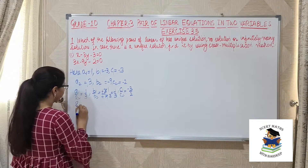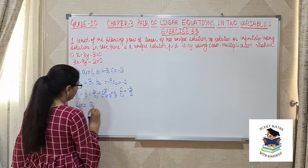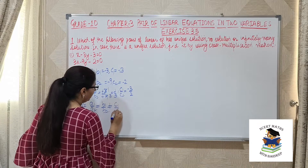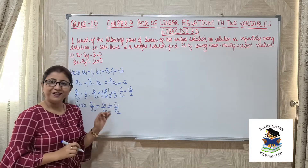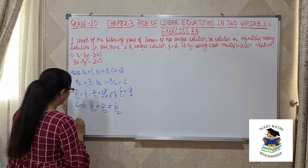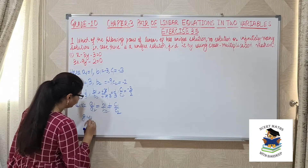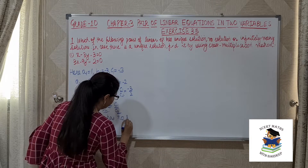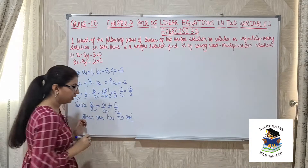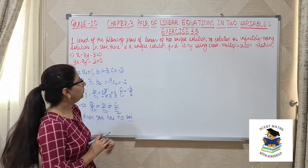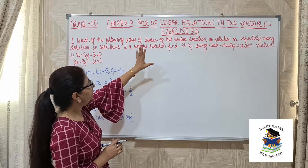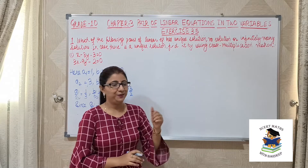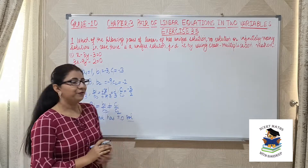Since a1/a2 equals b1/b2 but not equal to c1/c2, therefore the given pair has no solution. We are done with this part because the second part says only if it is a unique solution should we solve by cross multiplication method. So this is our first part. Now let's see the second one.